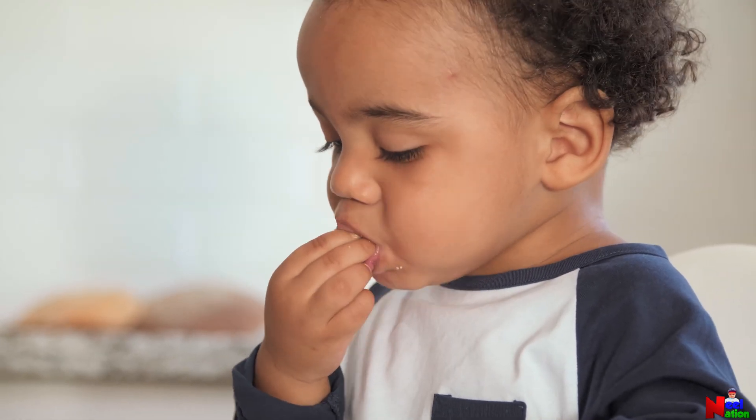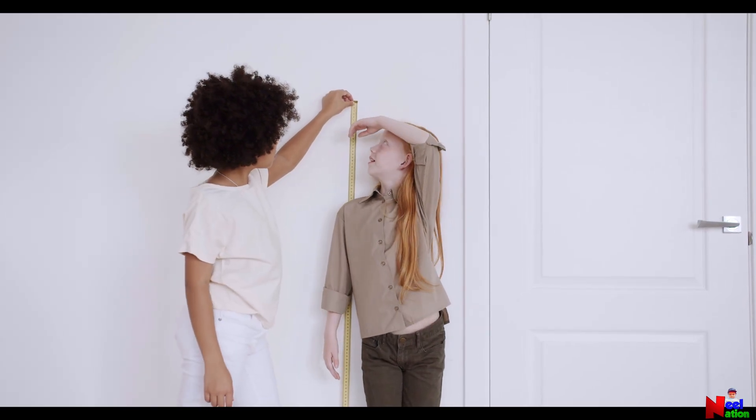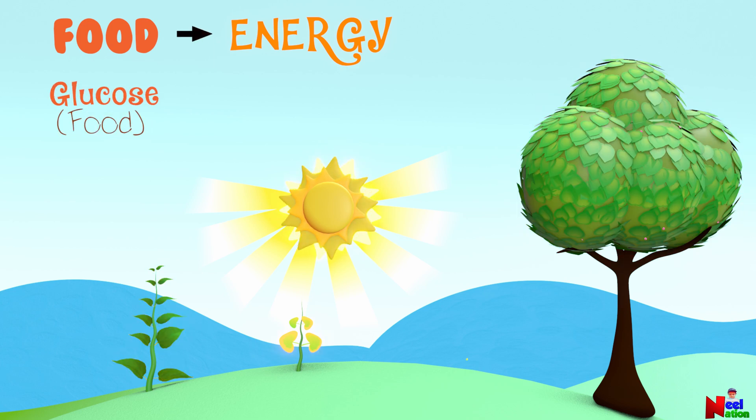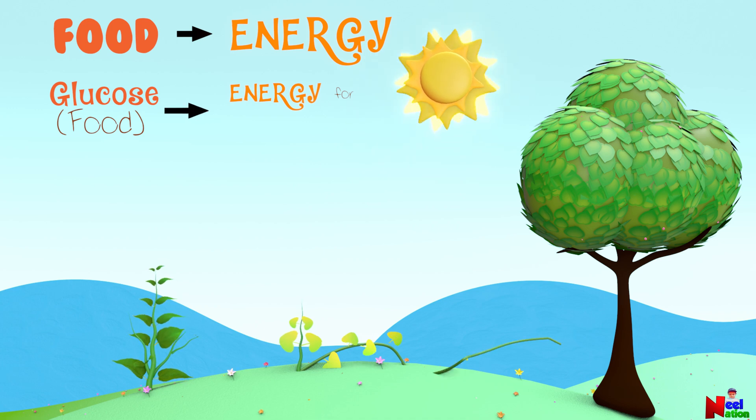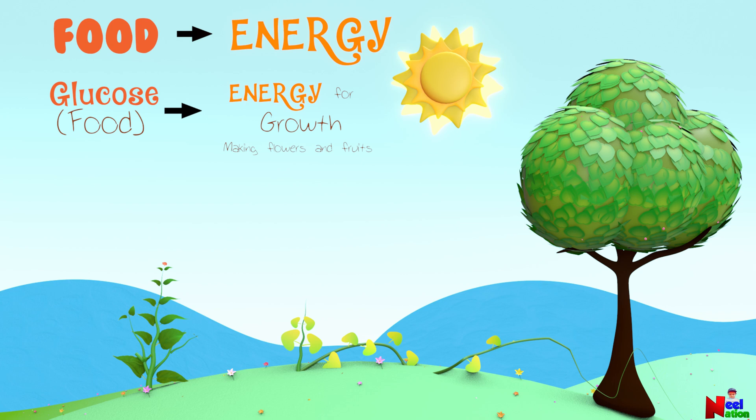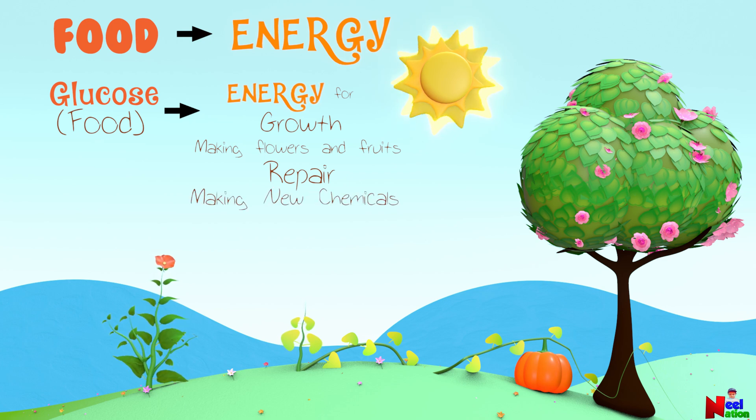Just like how you eat food to have energy to play, run and grow, plants use their food to have energy too. The food they make is called glucose, which is a type of sugar. This food is super important because it gives the plant energy to do everything it needs like growing taller, making flowers and fruits, fixing broken parts, or repairing and making new chemicals needed for plant growth and maintenance.